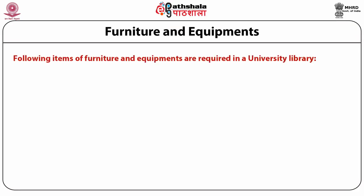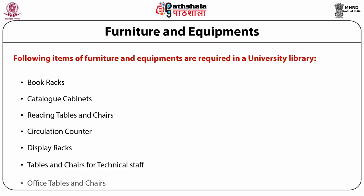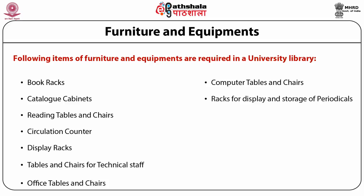Some of the items of furniture required in a university library include book racks, catalog cabinets, reading tables and chairs, circulation counter, display racks, tables and chairs for technical staff, office tables and chairs, computer tables and chairs, racks for display and storage of periodicals and magazines, newspaper stands, book trolleys, etc.